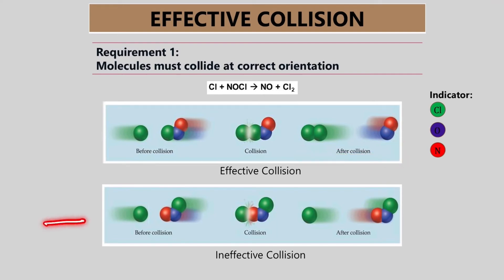Mari kita tengok pula kalau ineffective collision, macam mana dia berlaku. Kalau kita tengok daripada rajah tu, kita nampak green, dia collide dengan warna merah. This is what we call as ineffective collision. This will lead in correct orientation.